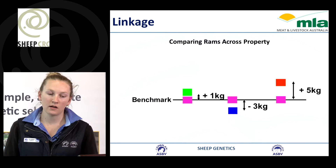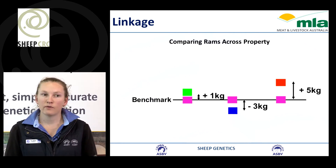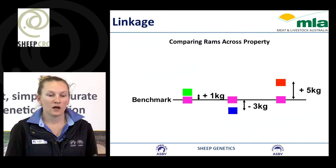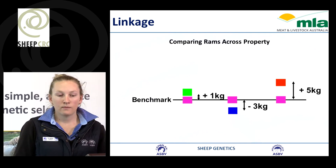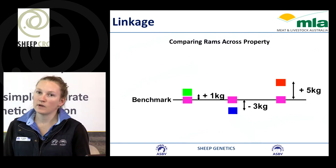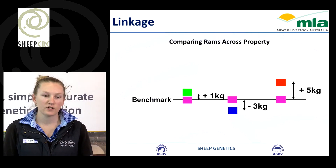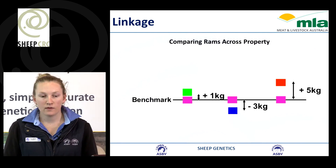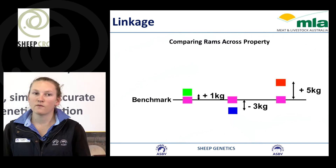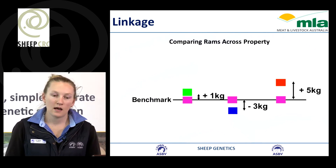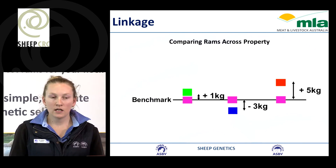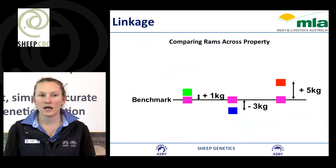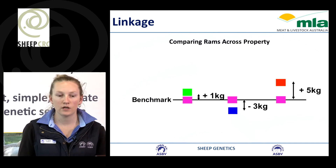On property A, those progeny are performing one kilo better than the average of the pink ram's progeny. On property B, the blue ram's progeny are actually performing three kilos less than the average of the pink ram's progeny. And on property C, the red ram's progeny are performing five kilos better than the link ram. So we can use that link ram — the pink ram — as a benchmark to compare how progeny are performing across all those different properties.